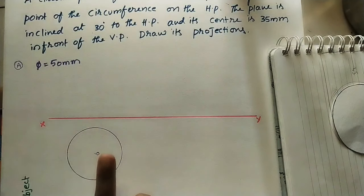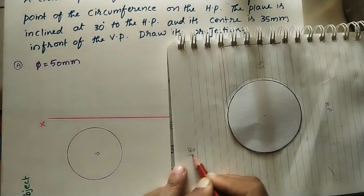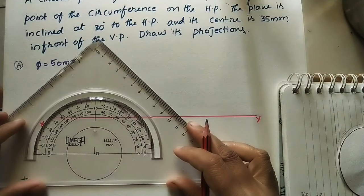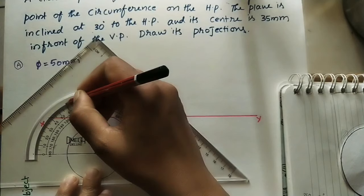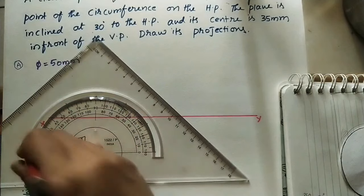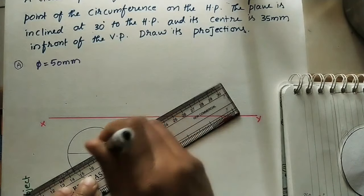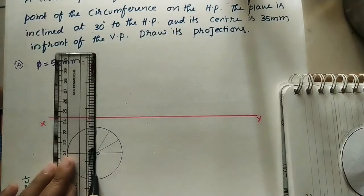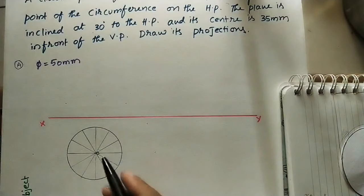Now divide this circle into 12 equal divisions. The center angle is 360 degrees; 360 divided by 12 means each division is 30 degrees. Using a protractor, mark 0, 30, 60, 90, 120, 150, 180 degrees and so on. Join each point to the center and extend to the other side, since the circle is symmetrical about the diameter. We have now divided the entire circle into 12 divisions. Mark the points starting from A.